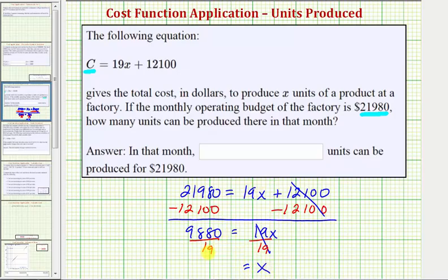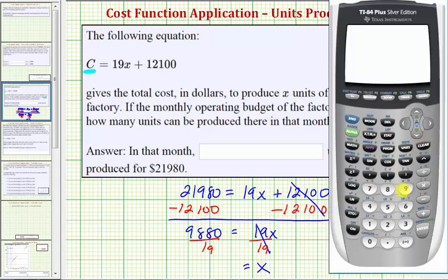Now we'll find this quotient on the calculator. 9,880 divided by 19 equals 520.